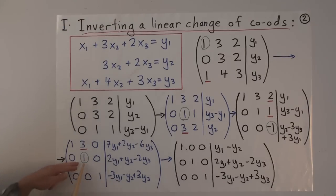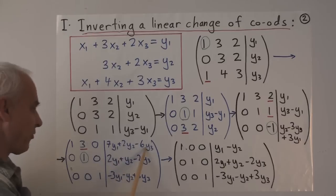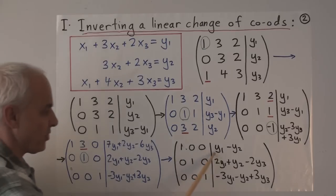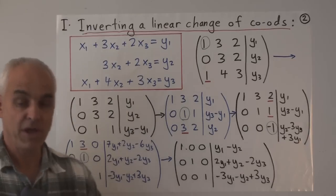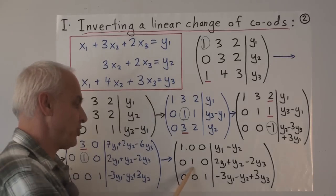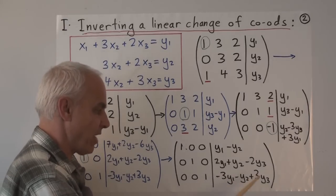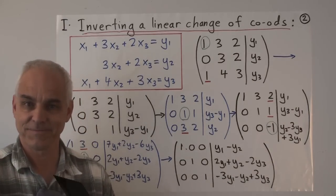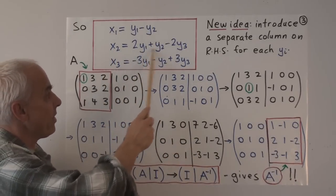It's almost finished now. The only thing left is to use this leading entry to eliminate the 3 above it. So we're going to take this row and subtract 3 times row number 2. The algebra gives us y1 minus y2. Now it's in fully reduced row echelon form. We've solved our system: x1 equals y1 minus y2, x2 equals 2y1 plus y2 minus 2y3, and x3 equals minus 3y1 minus y2 plus 3y3.